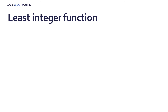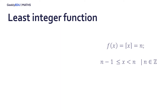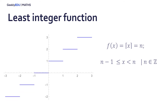The function whose value at any number x is the smallest integer greater than or equal to x is called the least integer function, or the integer ceiling function. f(x) equals the least integer equal to n, where x is greater than or equal to n minus 1 and less than n, and n is an integer. This means that if you take a number x equal to a non-integer, this function will give the integer after the given number. As with the greatest integer function, the domain is all the real numbers and the range is all the integer numbers. This is also a step function.